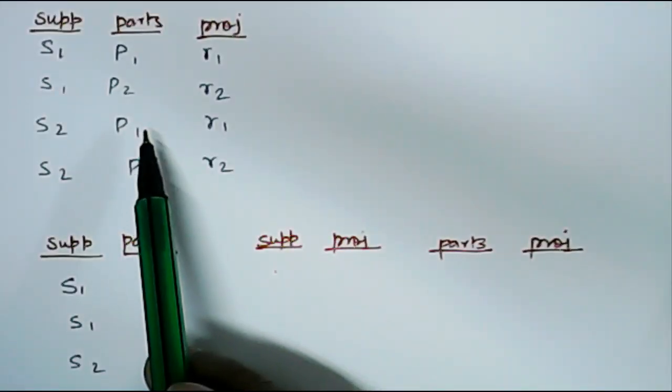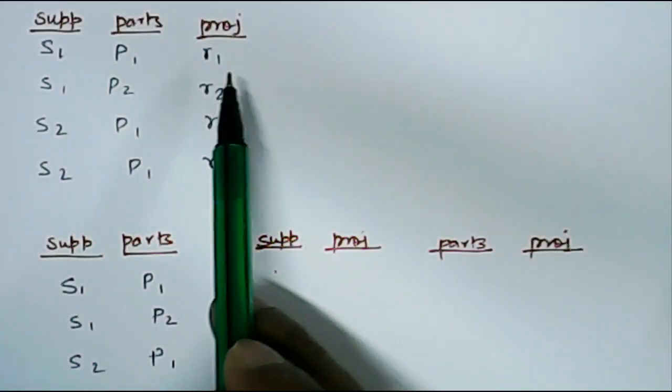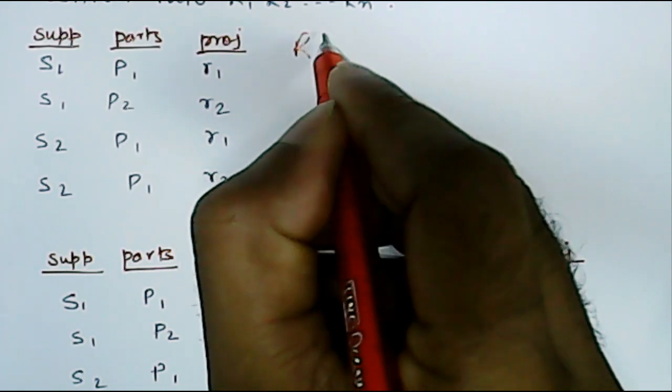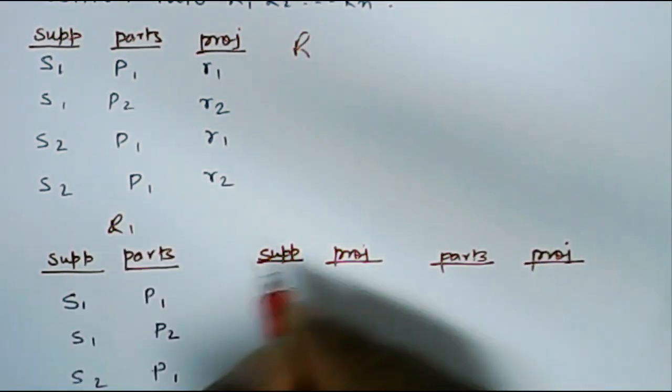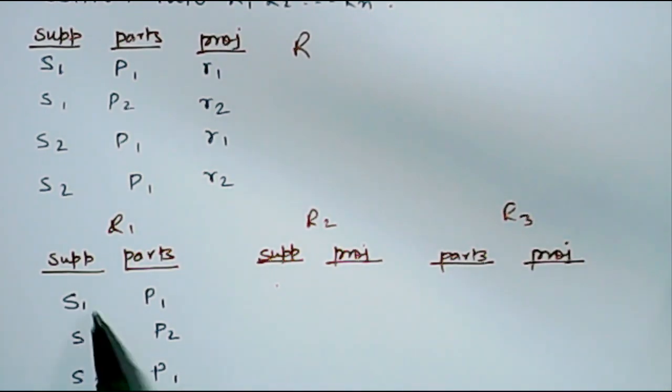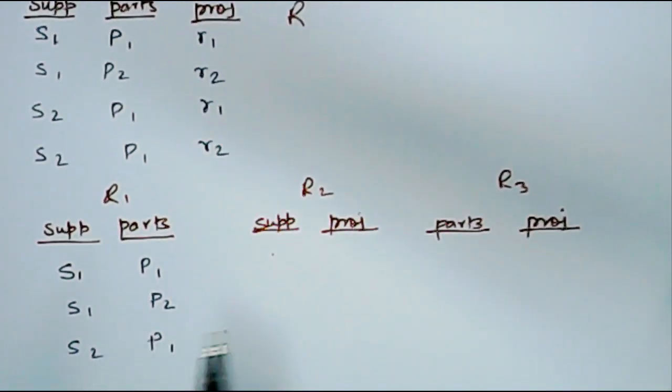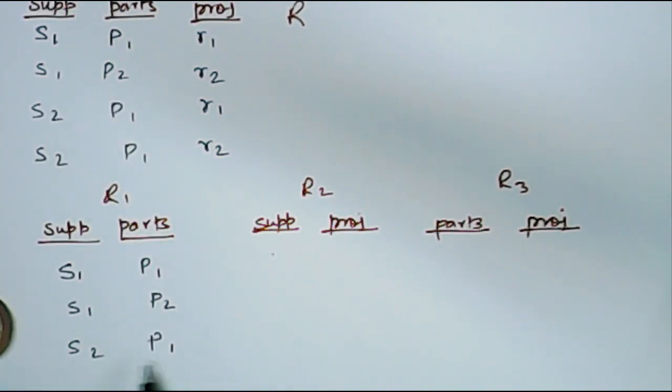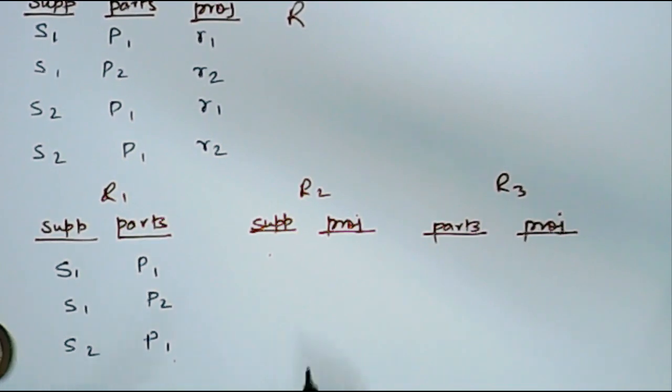In this table we are storing supplier, parts, and project. If we break this, let's say this is R, and if we break it into R1, R2, and R3, the first one is supplier and parts where S1 supplies P1, S1 also supplies P2, and S2 supplies only P1.